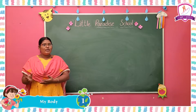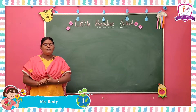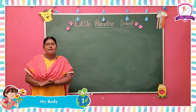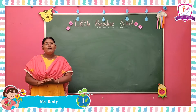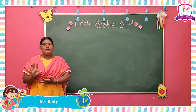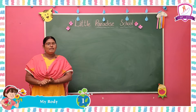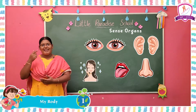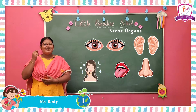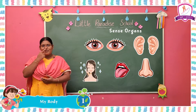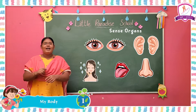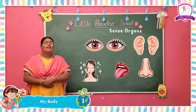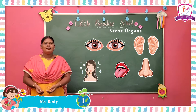In our body there are five sense organs. How many sense organs? Five sense organs. Can you say what are those sense organs? Eyes, ears, nose, tongue and skin are our sense organs.